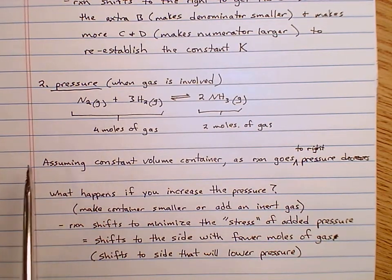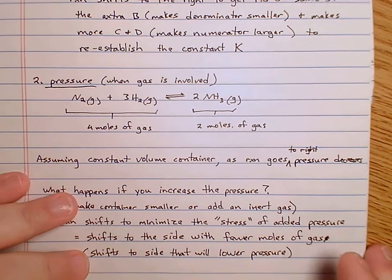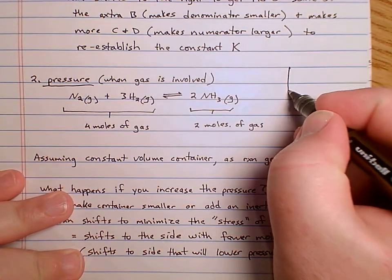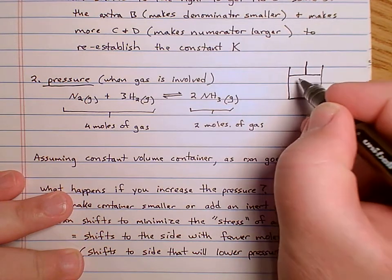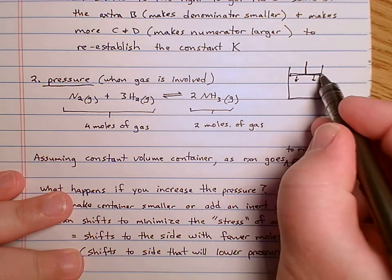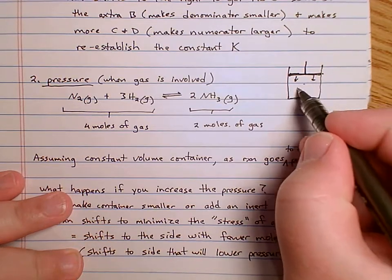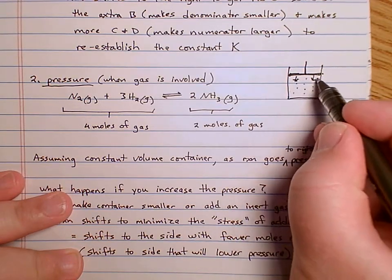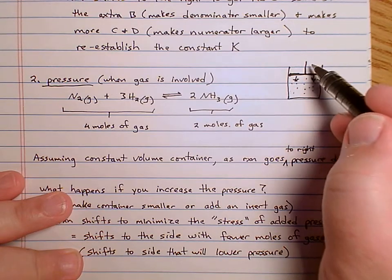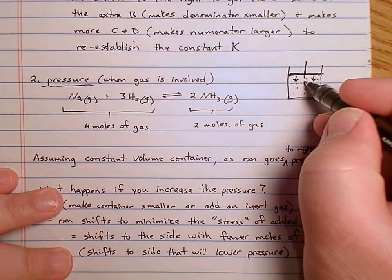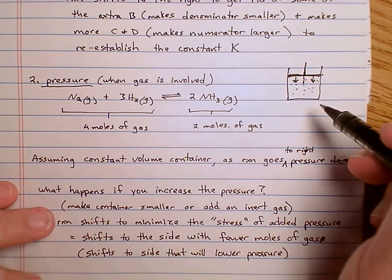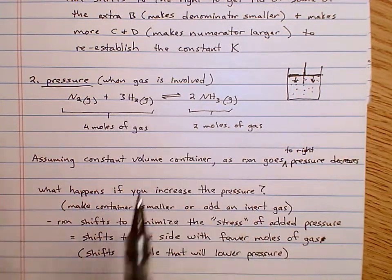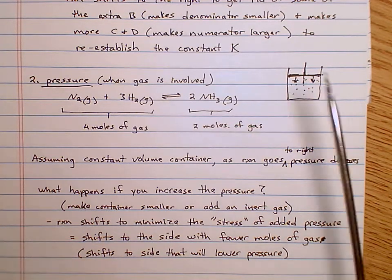There are two ways to apply pressure. One is if your container has a variable volume — a piston that can move up and down but won't let gas escape. If you force the piston down, the volume gets smaller, the pressure is higher, and this reaction will shift to the right to make more ammonia (NH3), trying to get rid of that extra pressure.